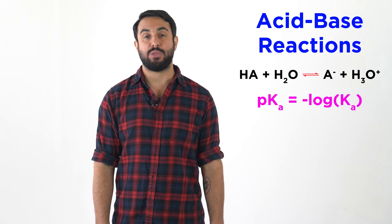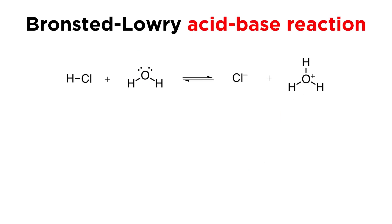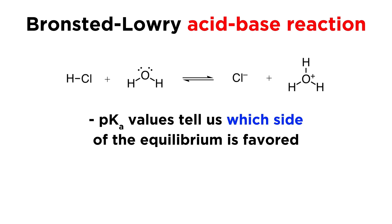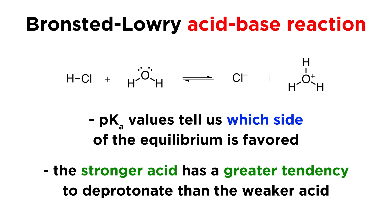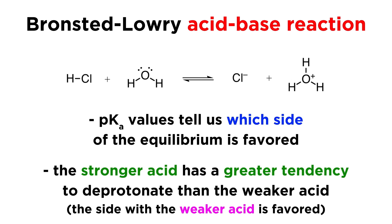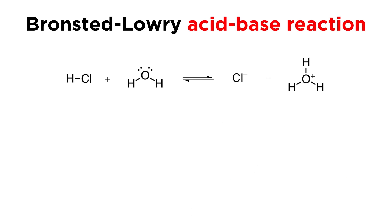Let's learn a simple method to do that now. When looking at an equilibrium that depicts a Bronsted-Lowry acid-base reaction, we can tell which side of the equilibrium is favored by looking at the pKa of the acids involved. The stronger acid will have a greater tendency to deprotonate than the weaker acid, so the side with the weaker acid will be favored, because it is being produced with greater frequency than the stronger acid.